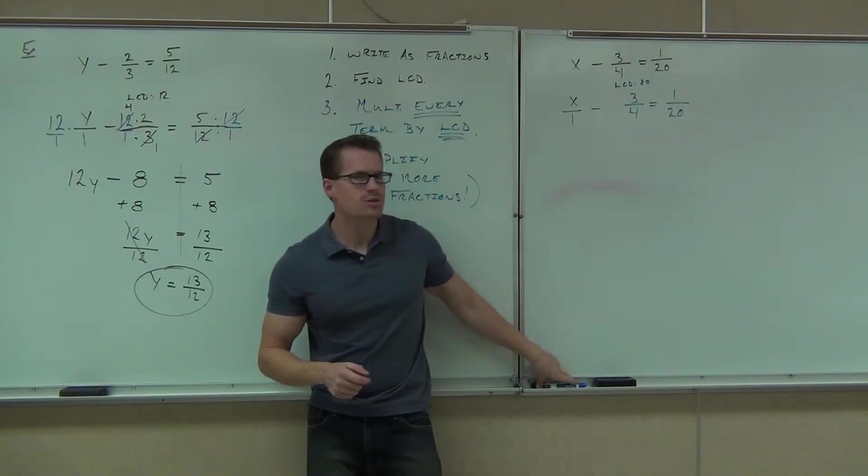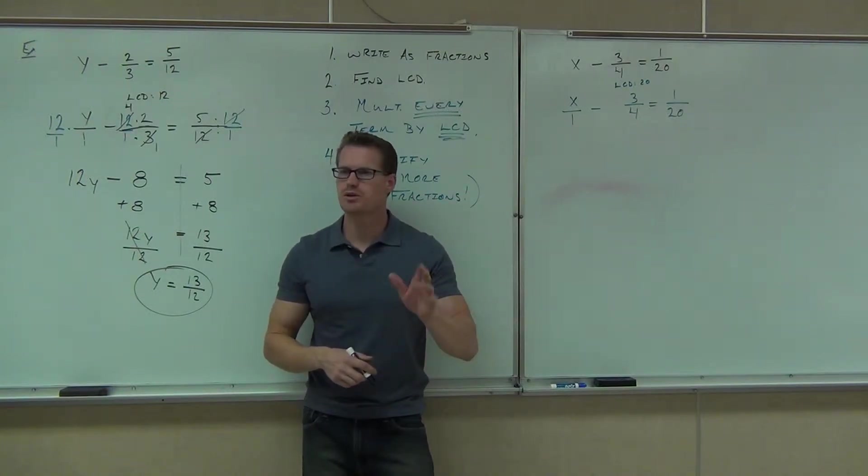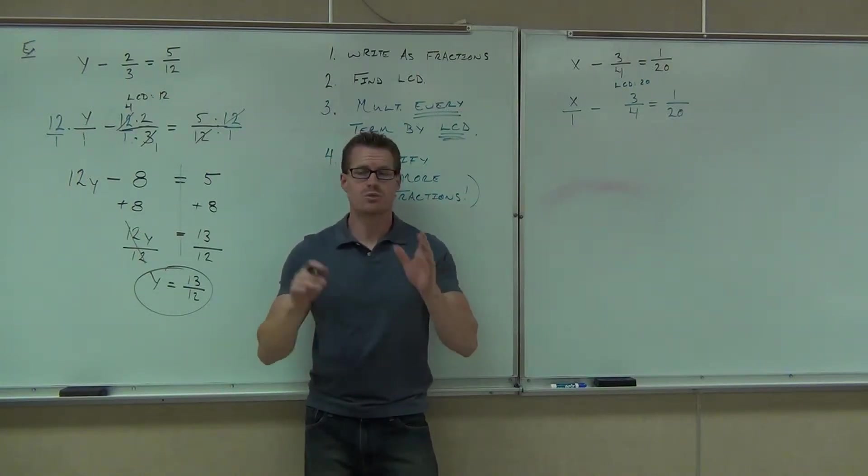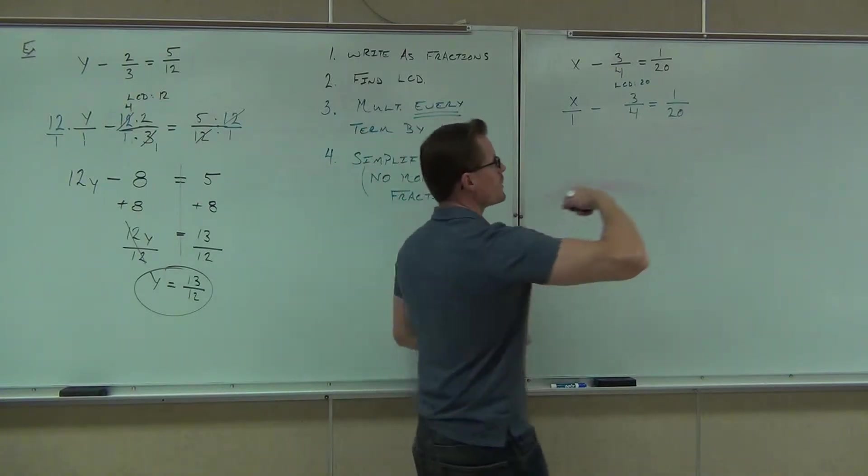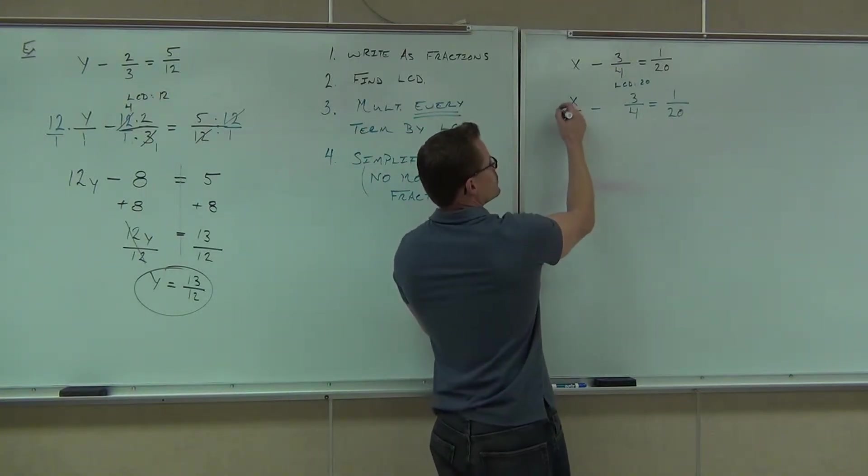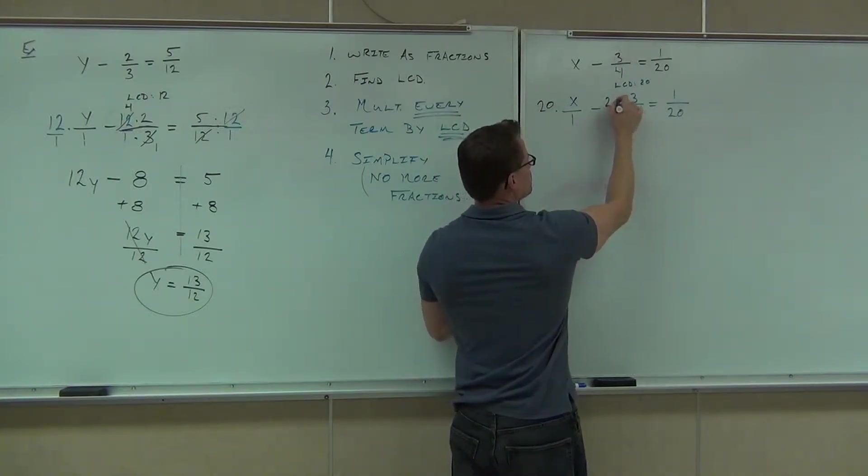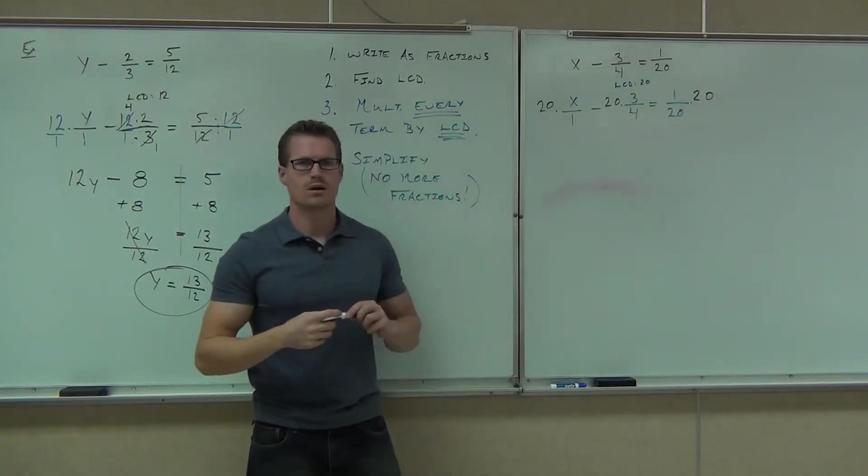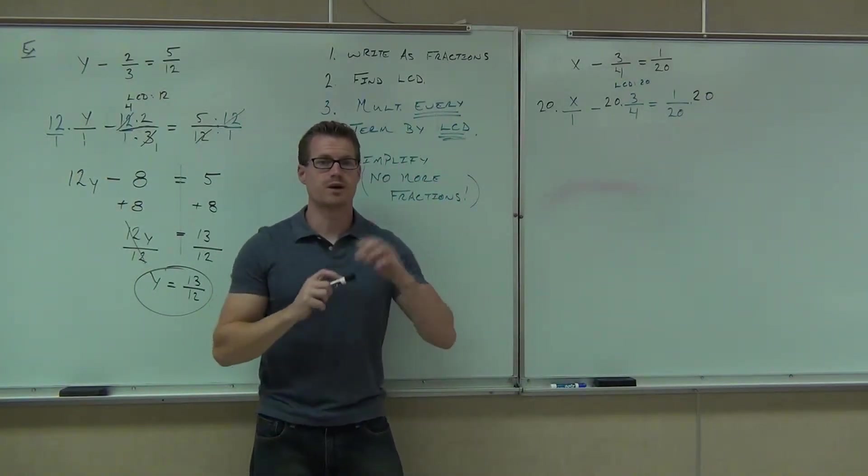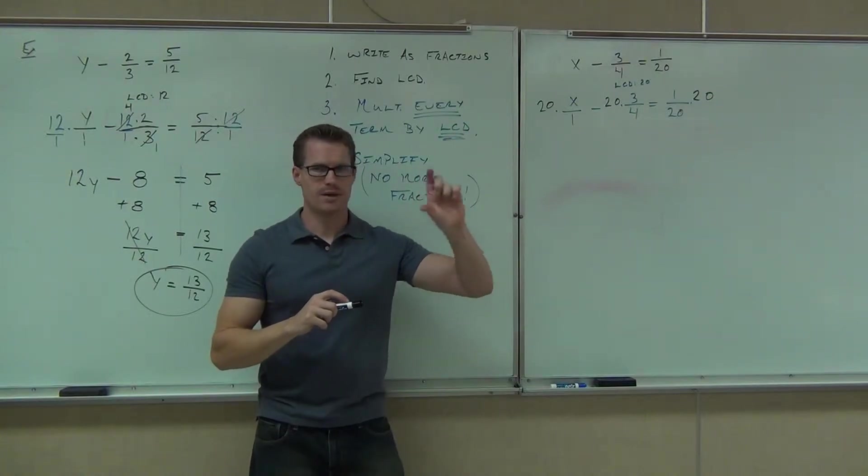What we're doing, instead of doing something like finding 20 over 20, we're not multiplying by 1 anymore. What we're doing is we're multiplying both sides by the same number. If you multiply both sides, what that comes down to is you're multiplying this fraction and this fraction and this fraction all by 20. That's what you're really doing. Multiplying every single term by that number.